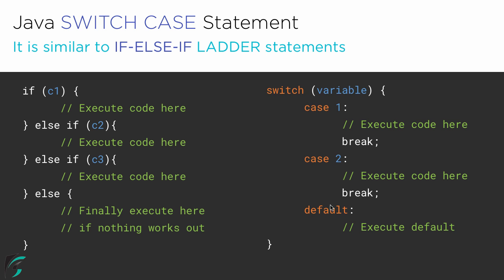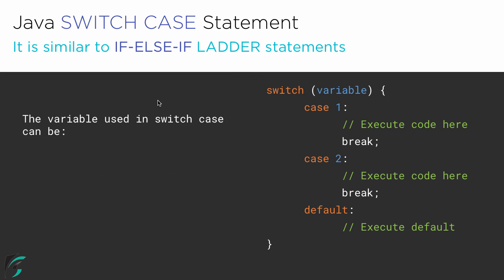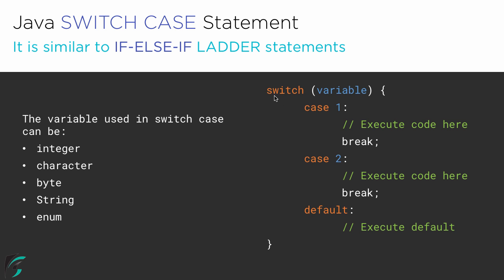Let us talk about this variable. What are the possible data types that this variable could be? The variable used in the switch case statement can be integer, character, byte, string, or enum. This variable cannot be a floating point value, any object, or any double value. So what to do if you have a floating point value or an object? In those situations, you can simply use the if-else if ladder statements instead.